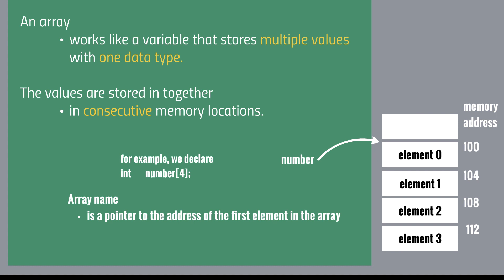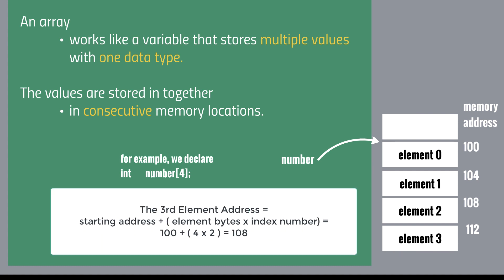The reason why we use consecutive memory space is to have the ability to access the starting element with index calculation. For example, the third element address can be calculated by the starting address plus the size of bytes multiplied by the index number. So this is the reason why we use consecutive memory space for arrays.